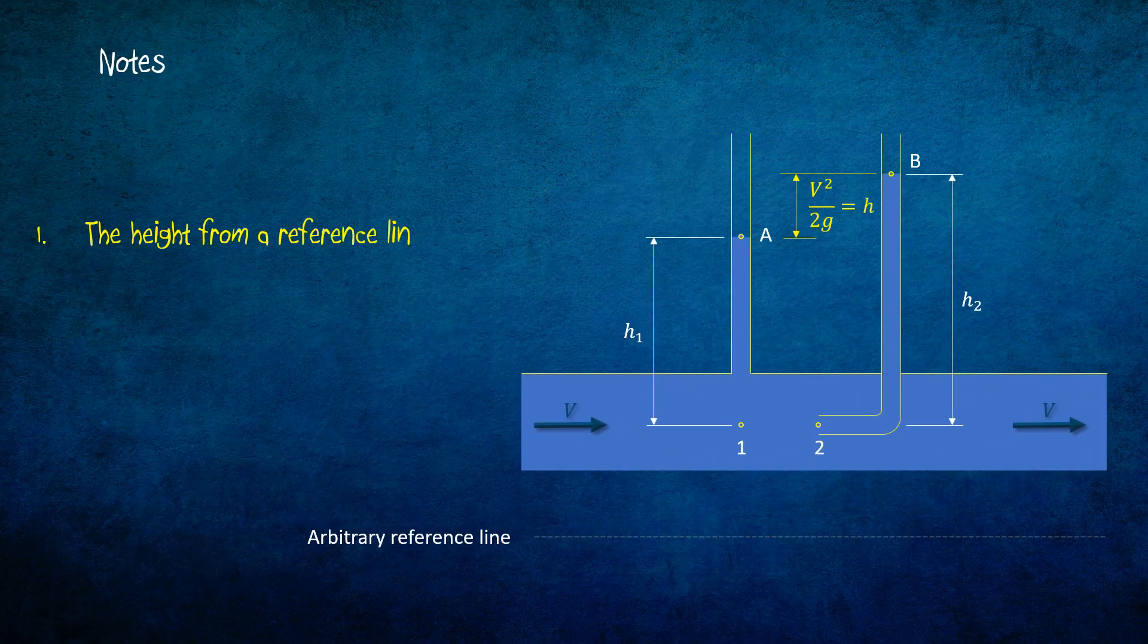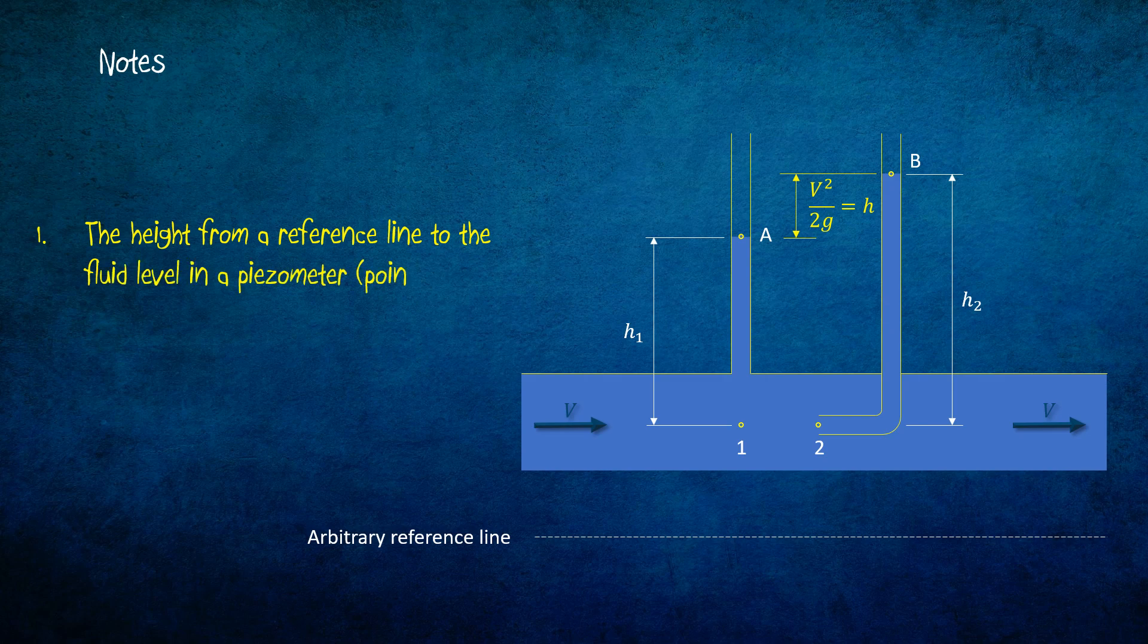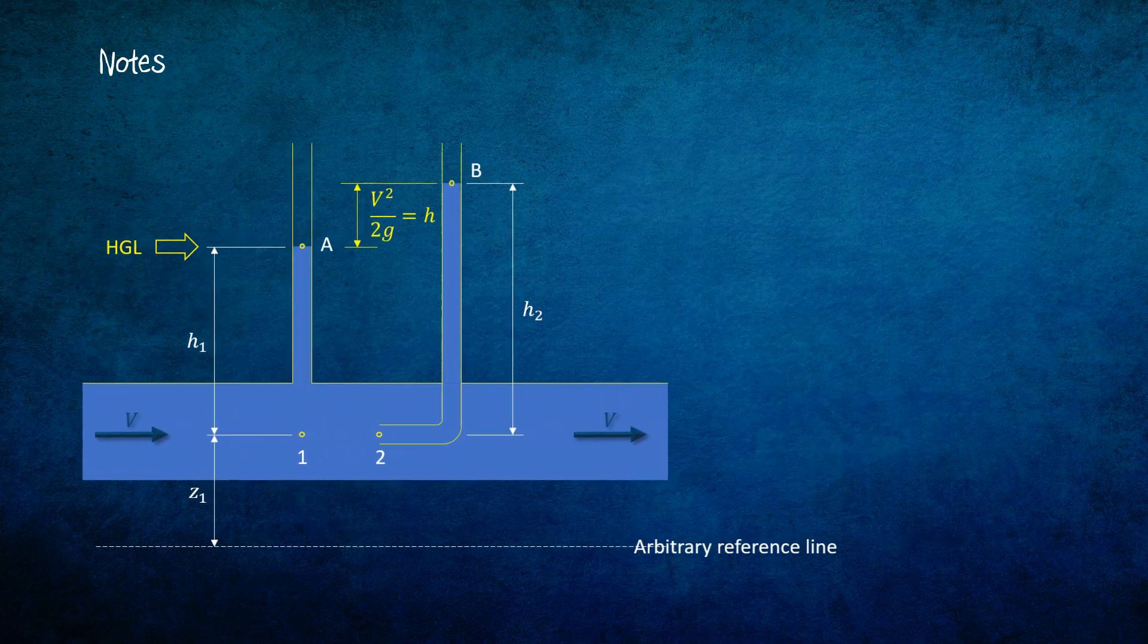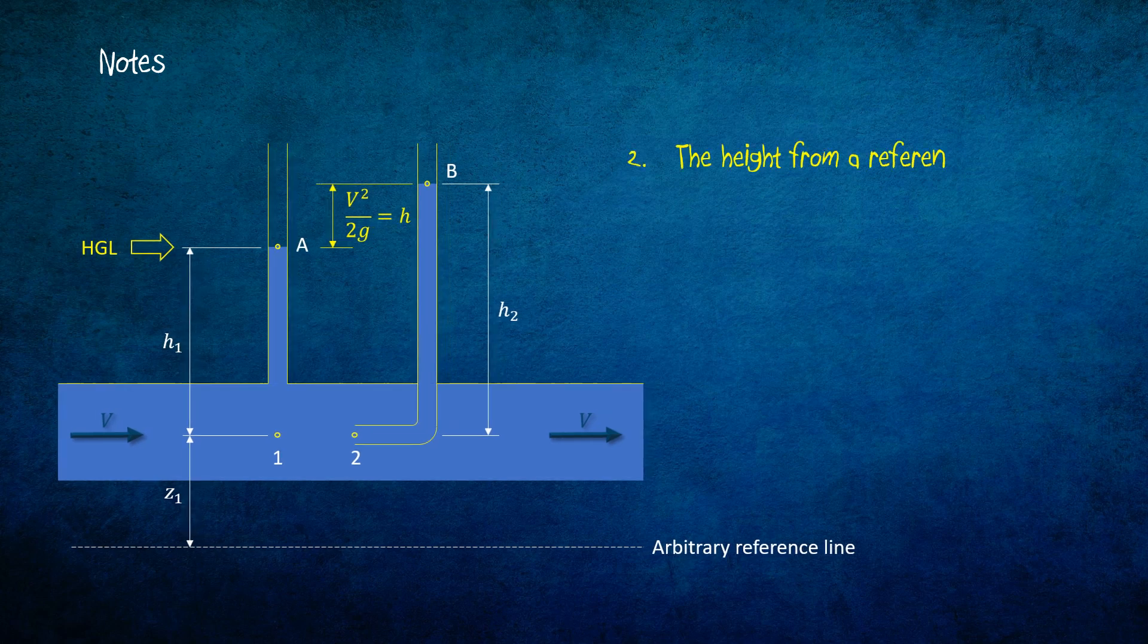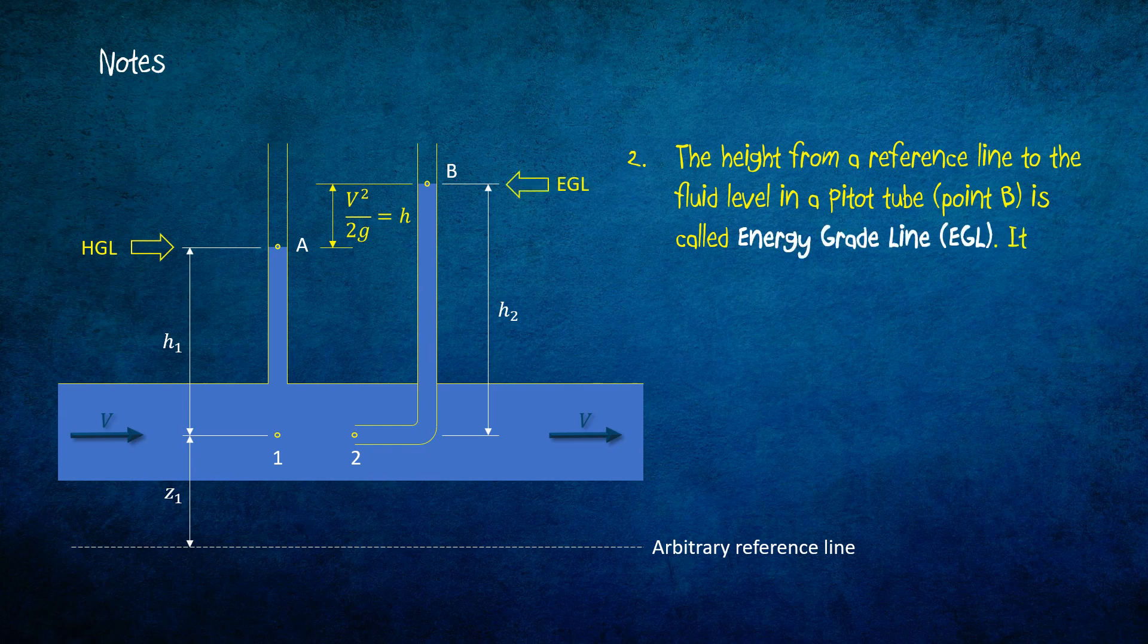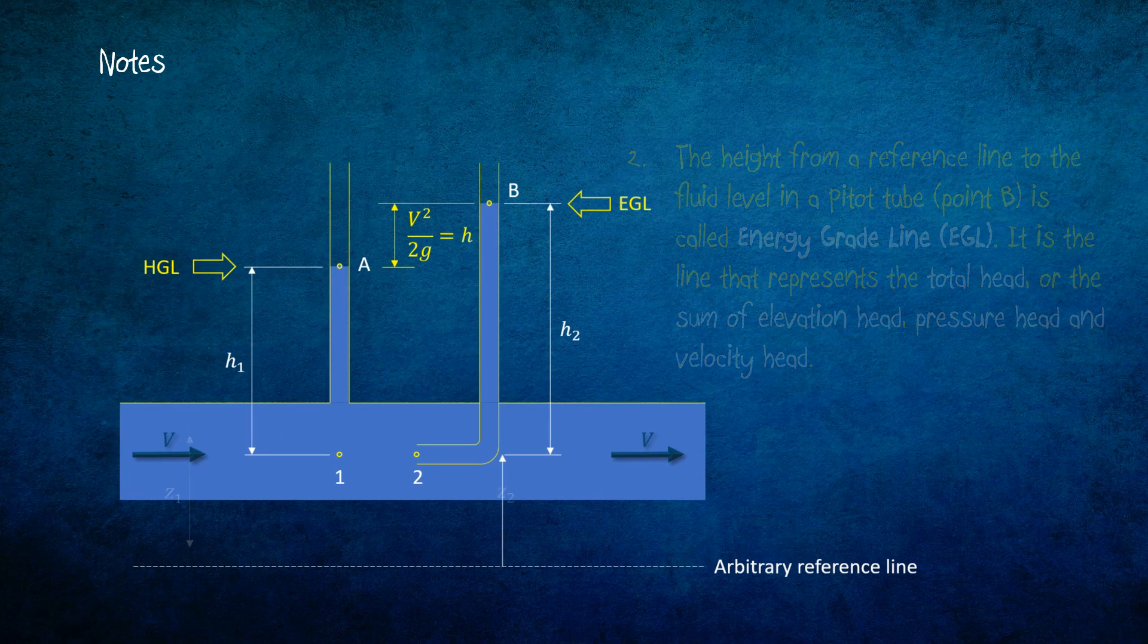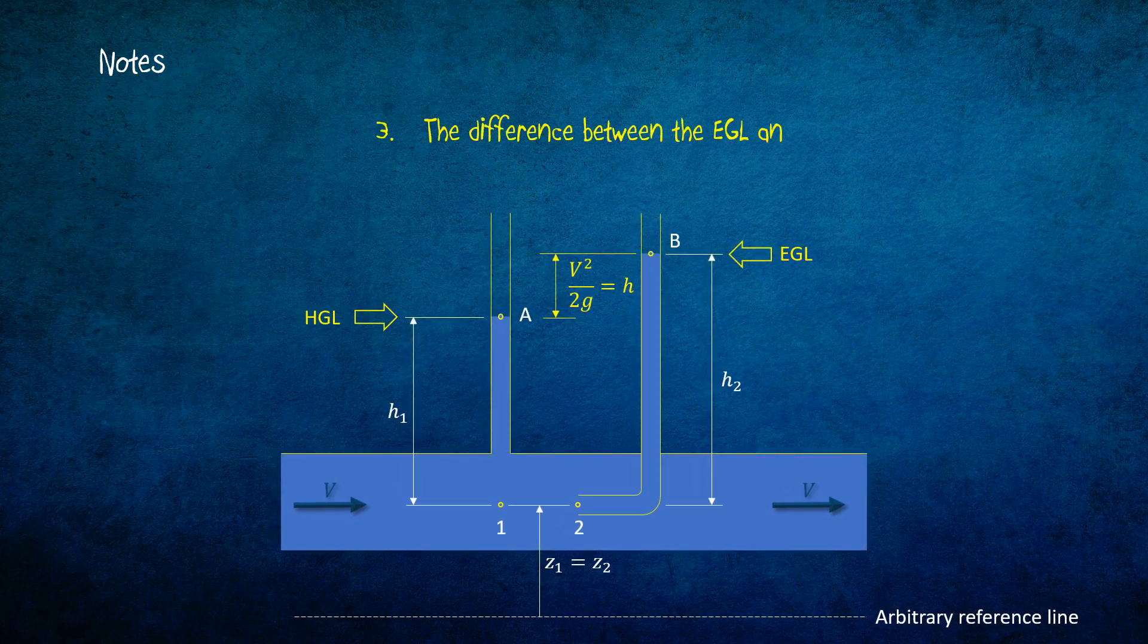Note that the height from a reference line to the fluid level in a piezometer point A is called hydraulic grade line HGL. It is the line that represents the sum of elevation head and pressure head. The height from a reference line to the fluid level in a pitot tube point B is called energy grade line EGL. It is the line that represents the total head or the sum of elevation, pressure, and velocity heads. The difference between the EGL and the HGL is the velocity head.